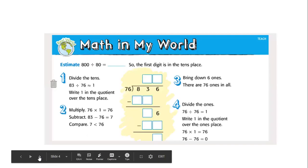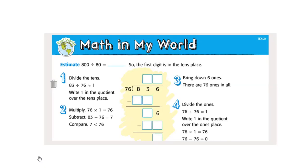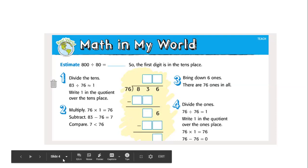That's the great thing about math is that we can use different strategies and ways that we know to solve problems. Let's take a look at math in my world example. It's asking us to divide 836 by 76. It's using an estimation strategy to help us figure out what our answer could be close to, so we rounded 836 down to 800 and 76 up to 80.